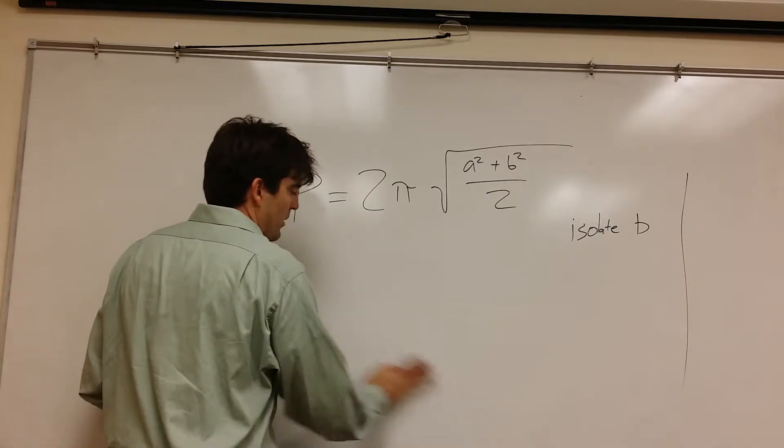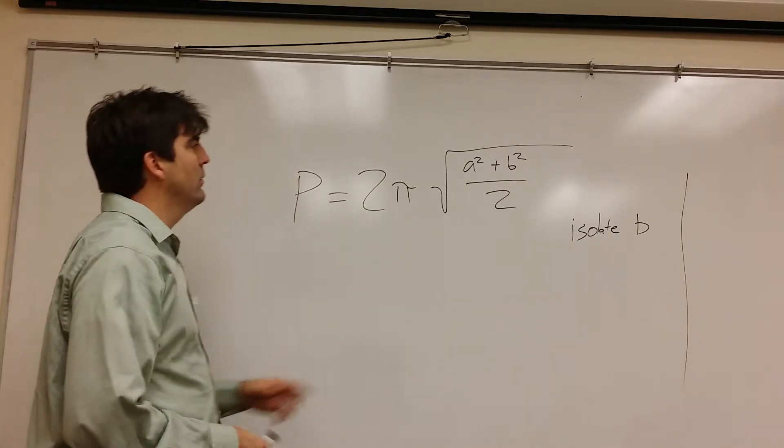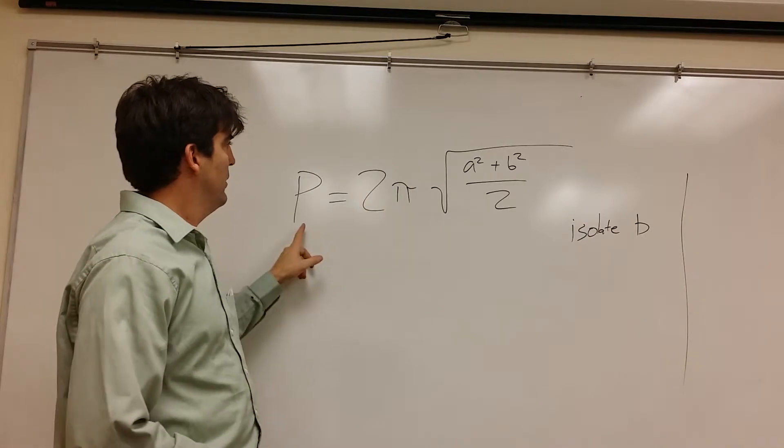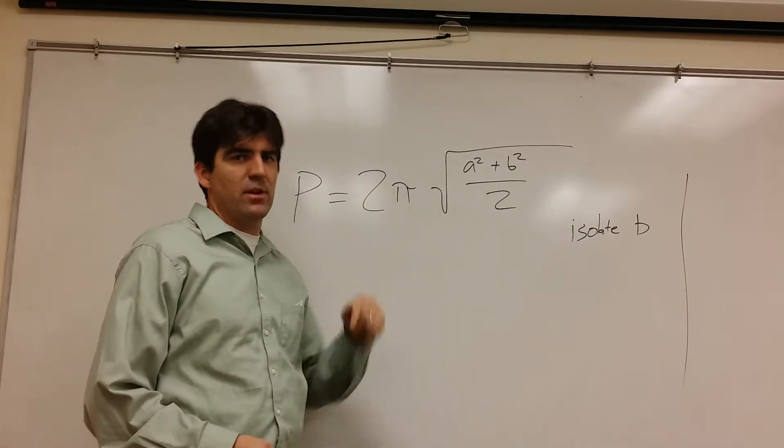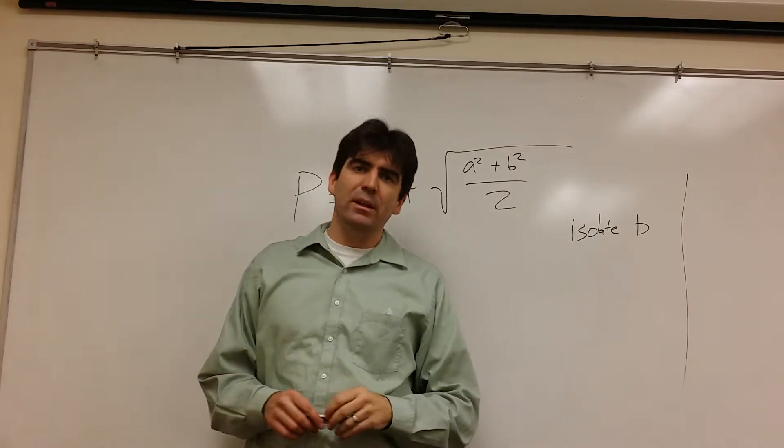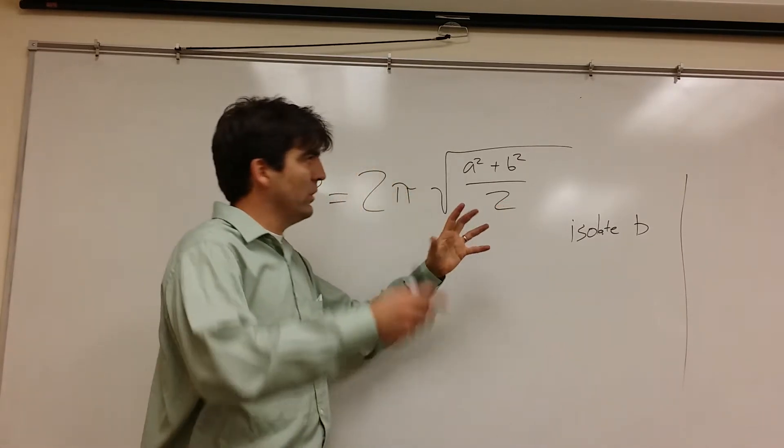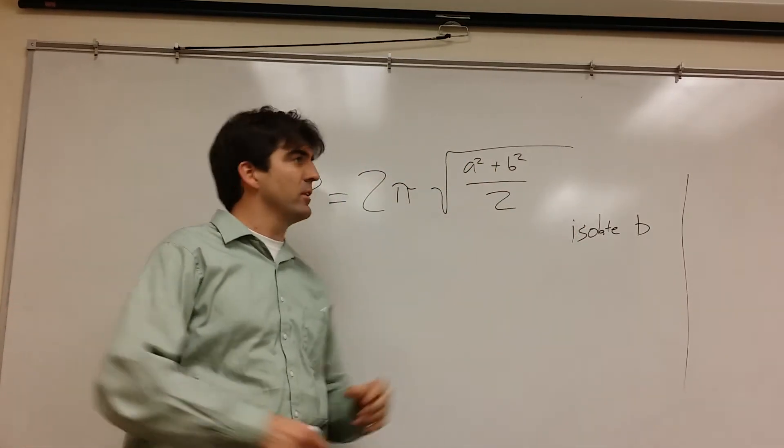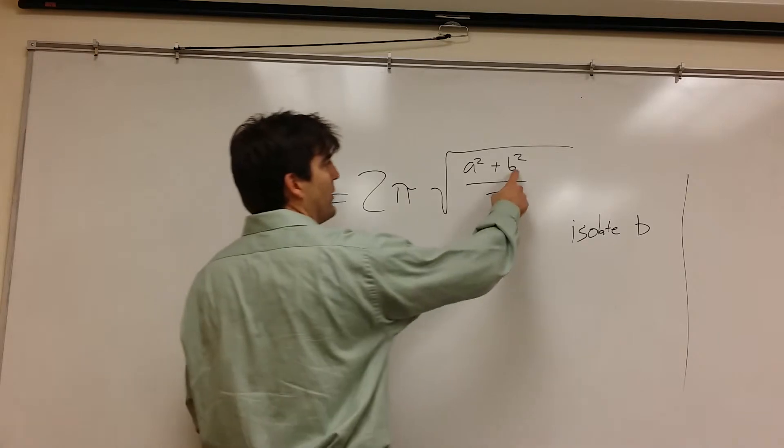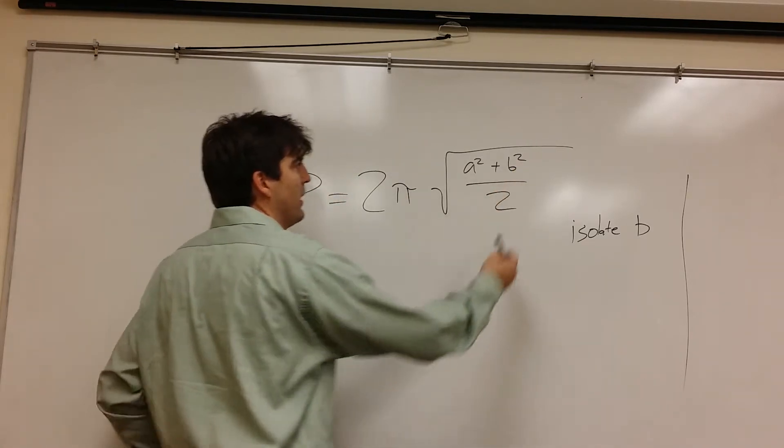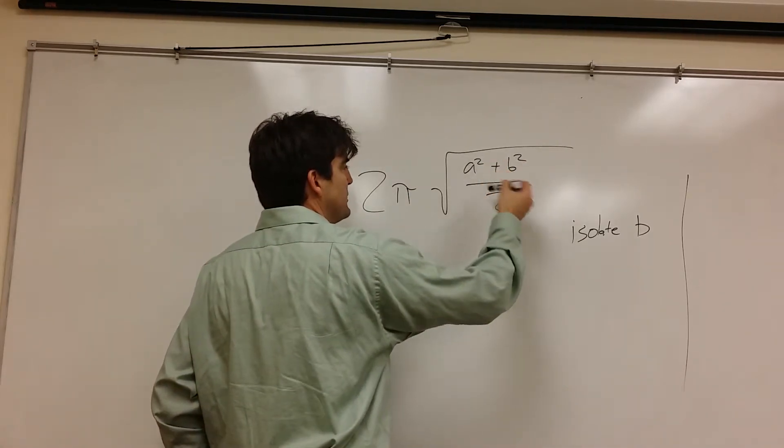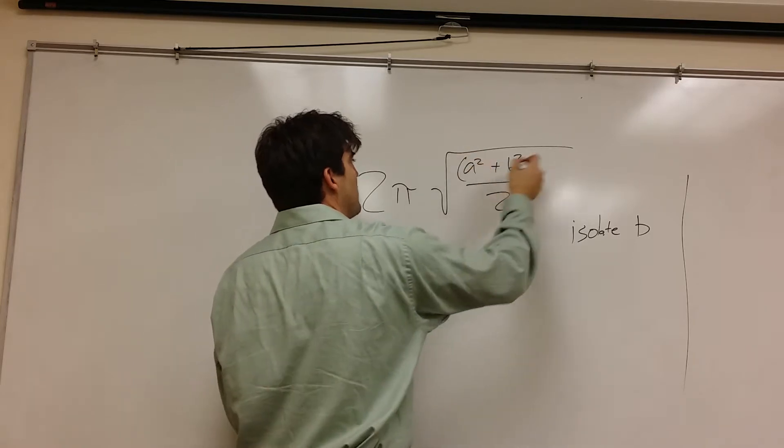So we're trying to get down to B. So let's start taking stuff off. Now, from the other video, peeling the onion, we're looking for the outermost thing first. If I was to follow order of operations starting with this B, I would do these exponents because they're in this automatic grouping symbol.